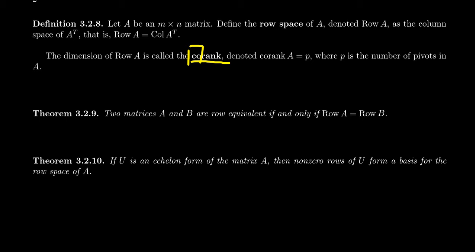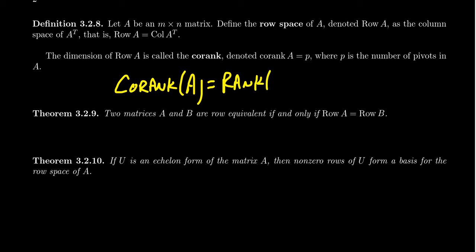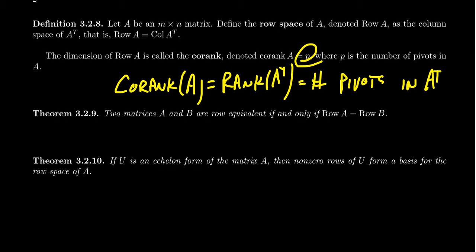To compute the co-rank, you're finding the rank of A transpose, which is the number of pivots in A transpose. It turns out that the number of pivots in A transpose is actually the same as the number of pivots in A — call it p. The reason is that for the row space, we count the number of pivot rows, which is the same as the number of pivot columns for the matrix.